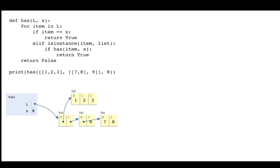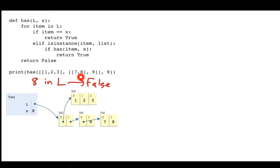Looking at this call to `has`, I have a `has` function that takes a list and returns whether some value `x` is somewhere in the nested structure. I have this nested list and I want to see if 8 is anywhere in there. If I used the `in` operator, that would be false, because that list only contains two things — two nested lists — and neither of those things is 8. The `in` operator is not recursive; it can't find that 8 is buried in there. That's the purpose of this `has` function.